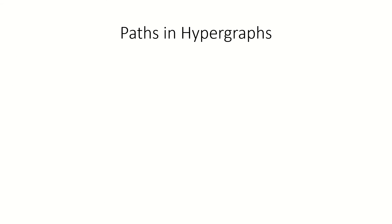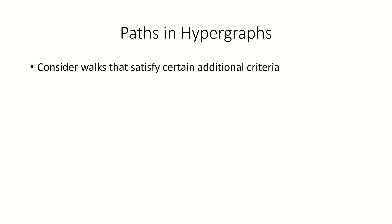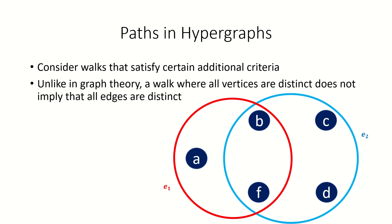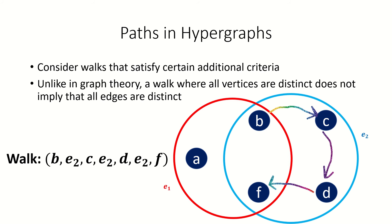Just like in graph theory, we might want to define some specific types of walks by imposing restrictions. Let's think about how we can generalize the notion of path from graph theory, which is a walk that doesn't repeat vertices. First, unlike in graph theory, if we impose the restriction that all vertices in the walk have to be distinct, we don't automatically get that all the edges in the walk are distinct. As for edges with more than two vertices, we might be able to use the same edge multiple times without visiting the same vertex multiple times.